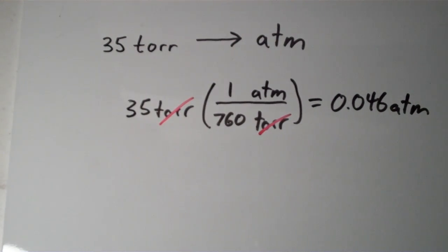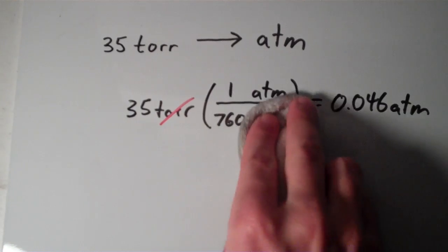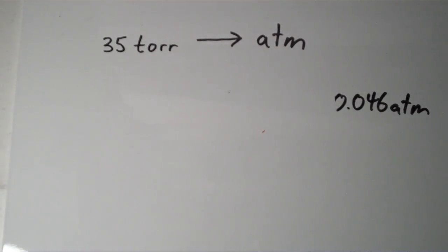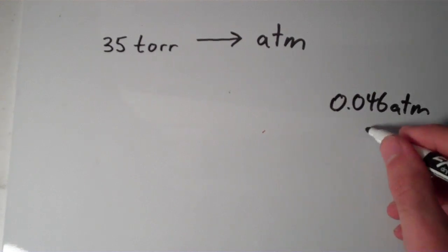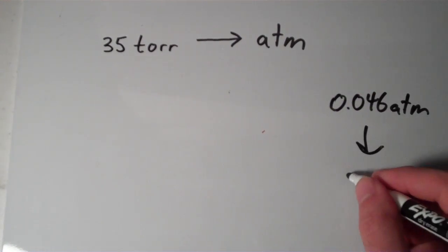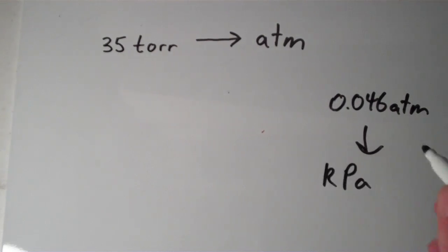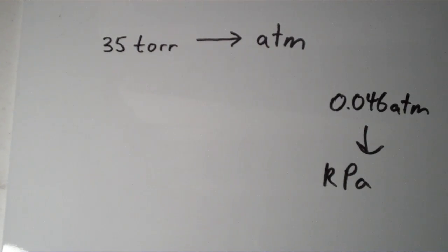Let's do another one. Let's keep this 0.046 atmospheres for a second. Suppose we have 0.046 atmospheres and I want to convert that to kilopascals. So 0.046 atmospheres — we want to convert that into kilopascals.